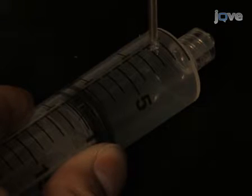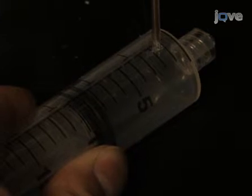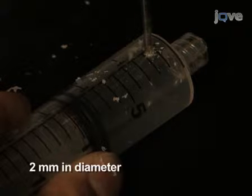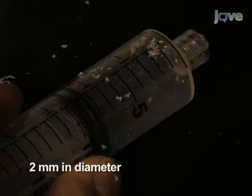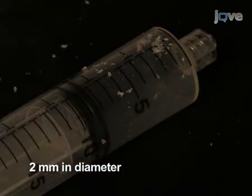Begin this procedure by sharpening the electrodes to be used for the recordings. Using a drill, make a small hole about two millimeters in diameter on the wall of a 20 milliliter syringe one centimeter from the tip.